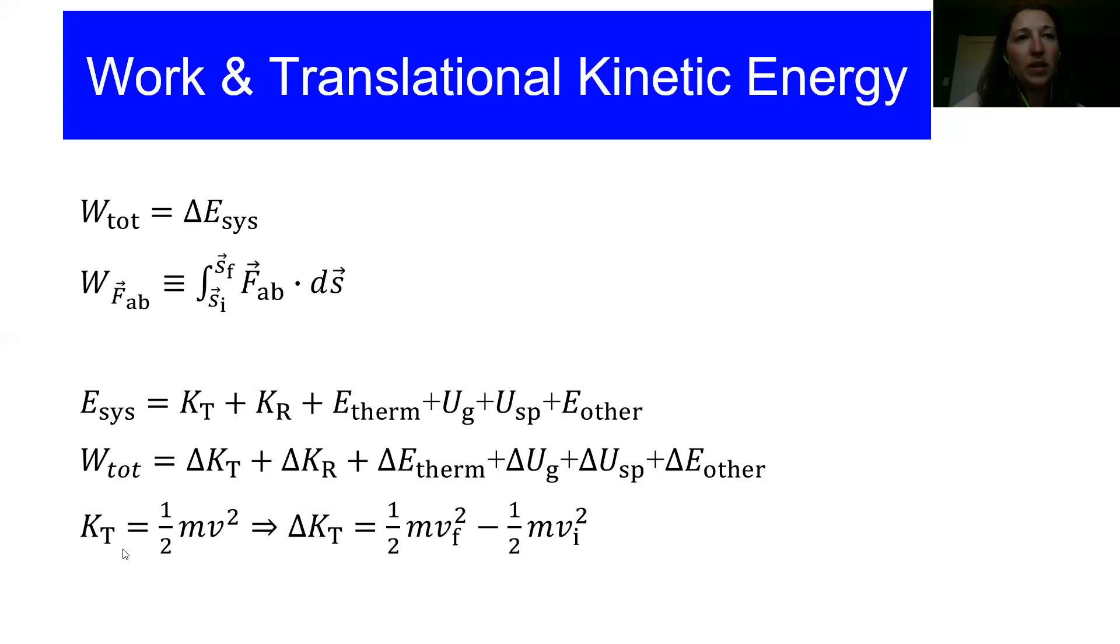And then this last equation here tells us what translational kinetic energy means, and this is the energy associated with the center of mass motion of an object, so if you have an object of mass m moving at speed v, its kinetic energy is one-half mv squared. And to find the change in kinetic energy, you just take the final kinetic energy and then subtract off the initial kinetic energy.